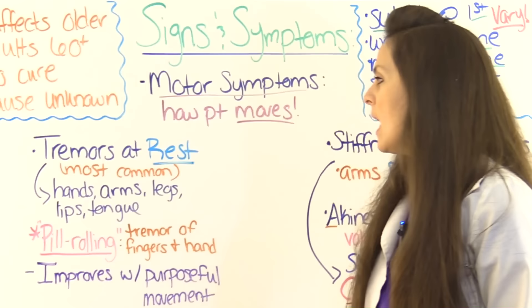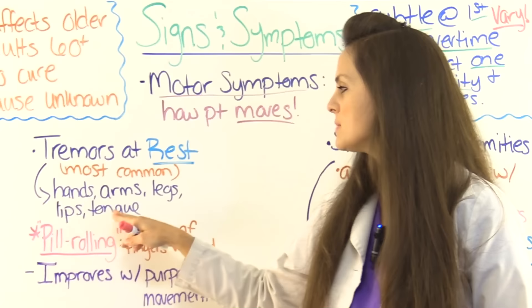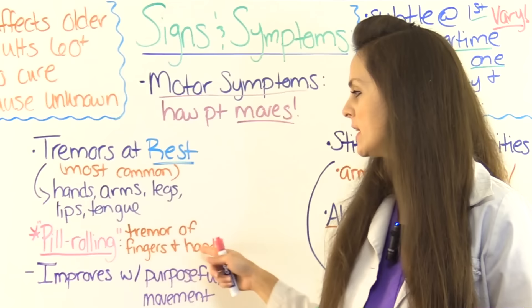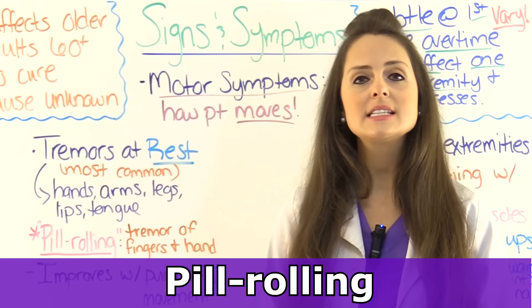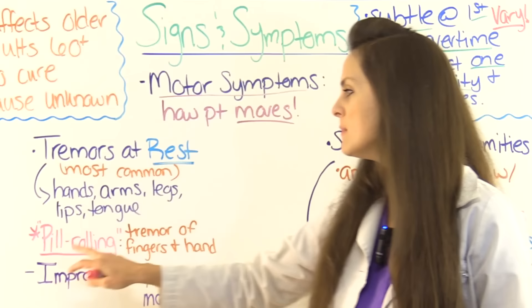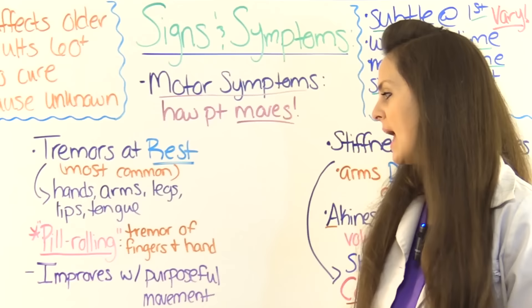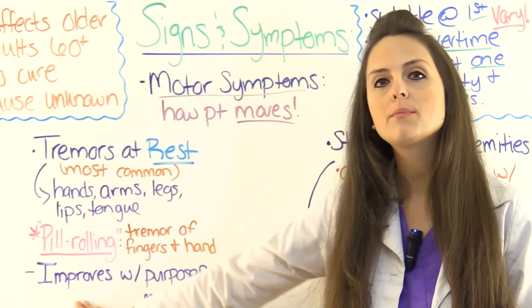A common sign and symptom experienced in Parkinson's disease is tremors — tremors that will occur at rest and can occur in the hands, arms, legs, and even the lips and the tongue. When the patient experiences tremors of the fingers and hand, we call this 'pill rolling' — the hand and fingers will tremor and it looks just like the patient is rolling a pill between their fingers. Remember: these tremors tend to improve with purposeful movement and are worse when resting.